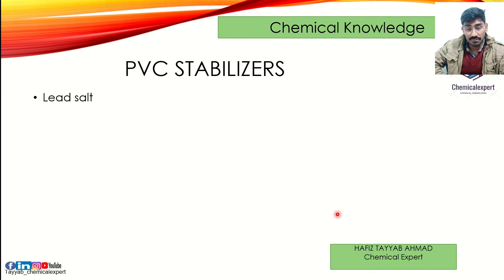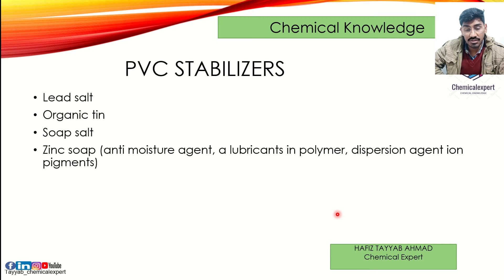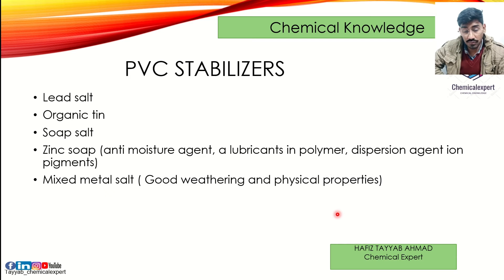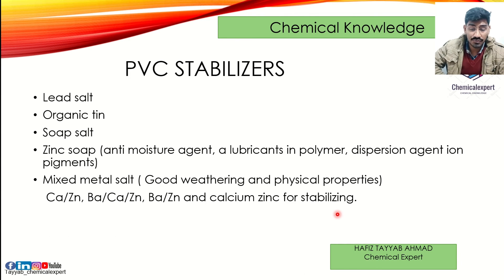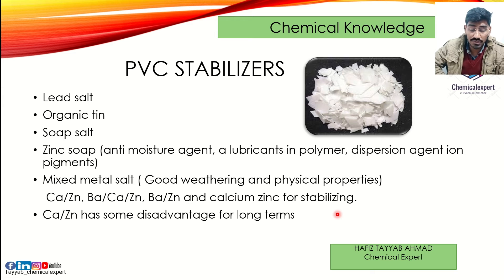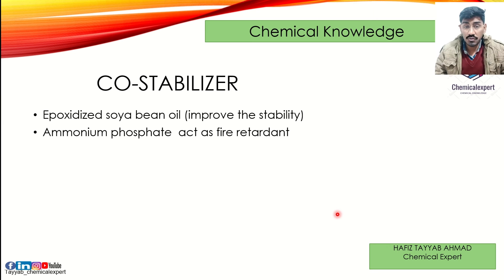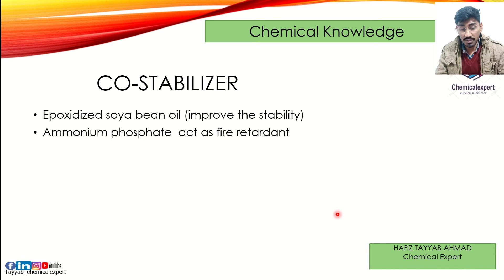There are different kinds of PVC stabilizers. Some of them are: lead salt stabilizers, organic tin stabilizers, soap salt stabilizers, zinc soap, anti-moisture agents and lubricants, dispersion agents, ions and pigments, and mixed metal salts, which are good for weather and physical properties. Some names to note: calcium-zinc, barium-zinc, and calcium-barium-zinc for stabilizing ability. Calcium alone has some long-term disadvantages. Co-stabilizers include epoxidized soybean oil and fire retardants such as ammonium phosphate.